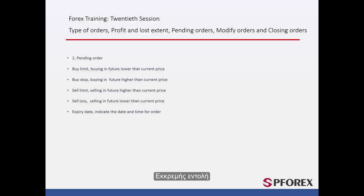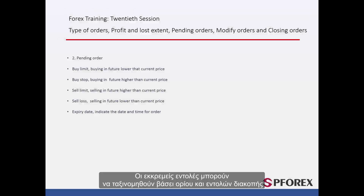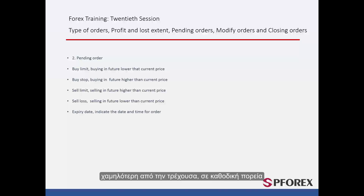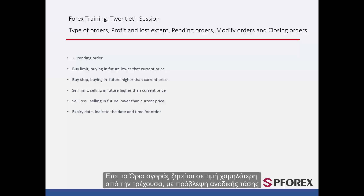Pending orders can be classified as limit and stop orders. A Buy Limit order should be placed when a trader speculates that the market trend will rise after it touches a certain entry price lower than the current price on a downward trend. So a buy limit is ordered at a price lower than the current price with a forecast of an upward trend.